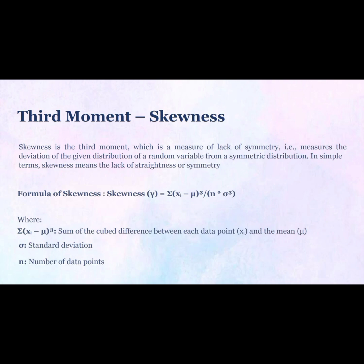The formula for skewness is: Skewness (γ) = Σ(xᵢ − μ)³ / (n × σ³), where Σ(xᵢ − μ)³ is the sum of the cubed differences between each data point and the mean, σ is the standard deviation, and n is the number of data points.